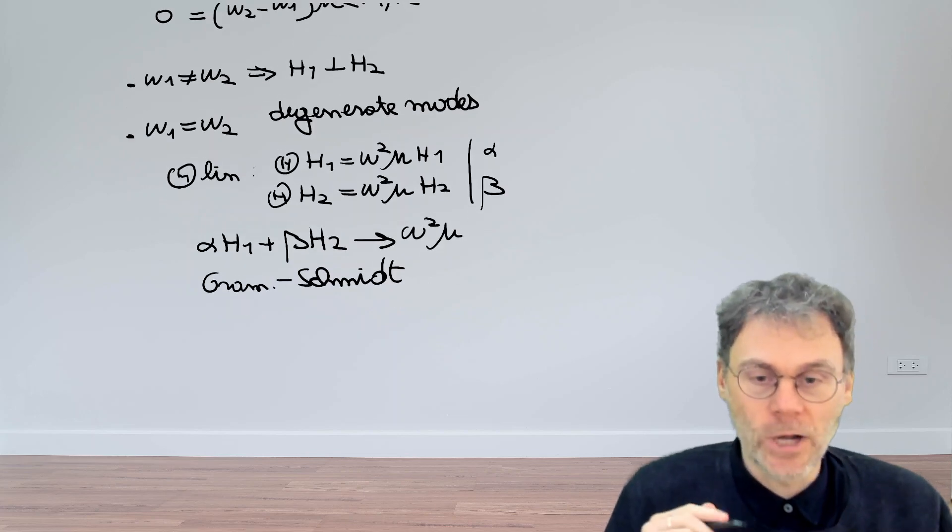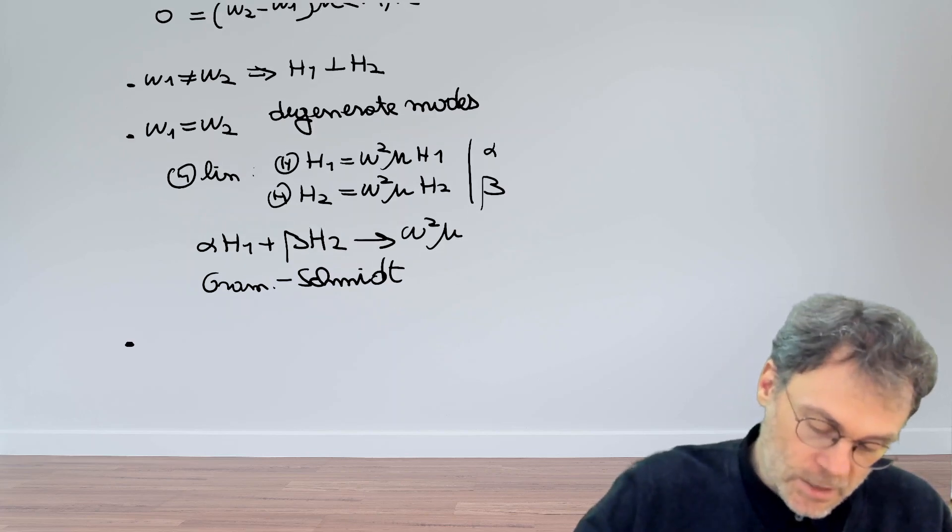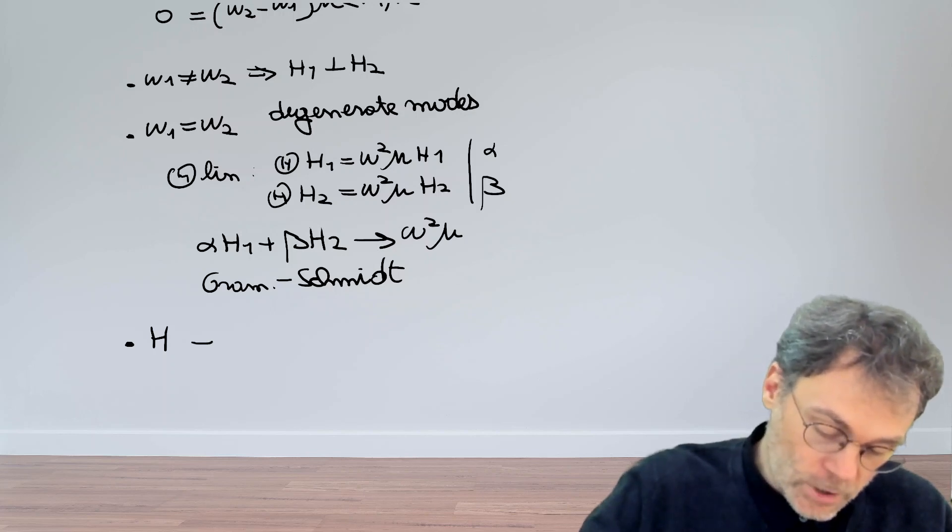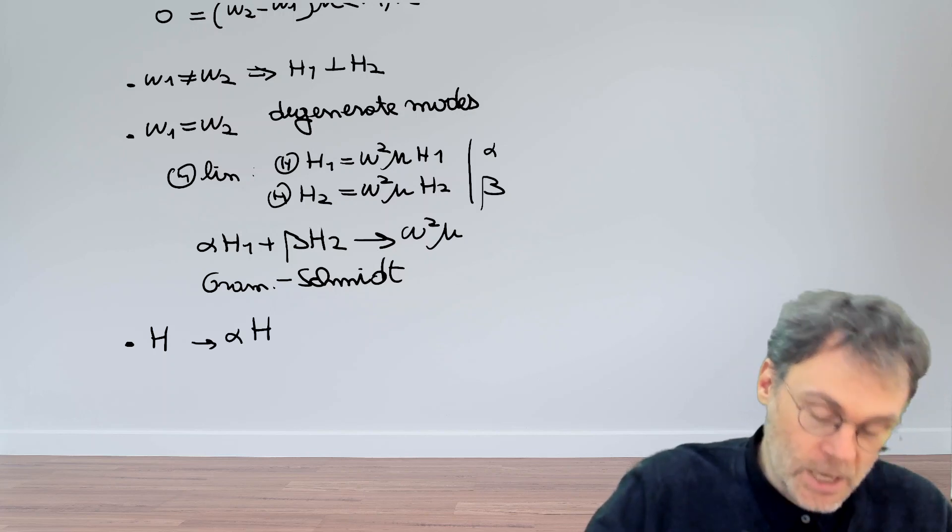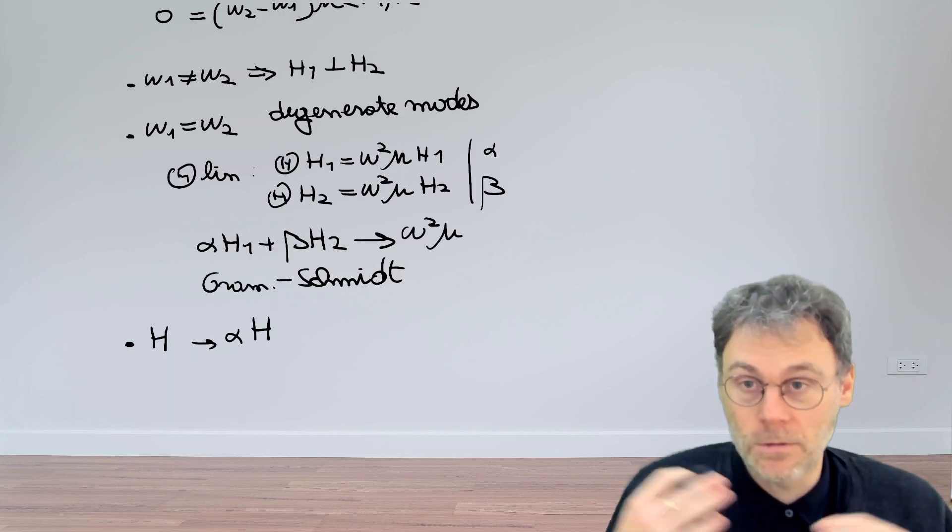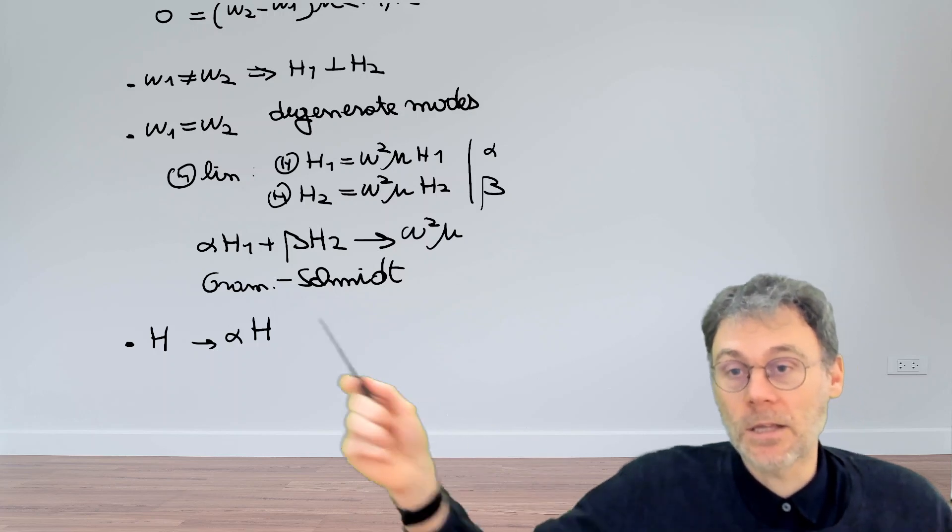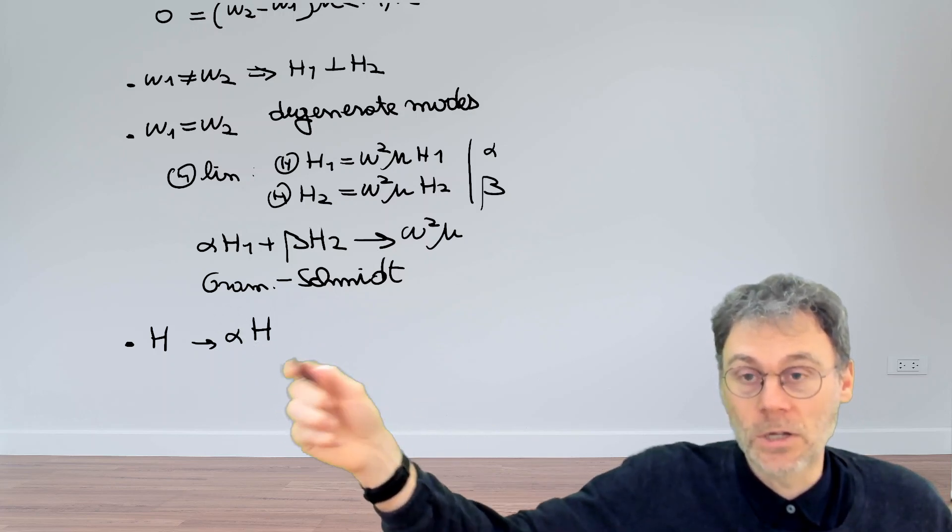By the way, speaking of degenerate modes, it's also the case that if you have a certain solution H, then if you multiply H by a scalar, that alpha H will also be a solution. That's very trivial. But in this case, we're not really saying that H and alpha H are degenerate modes.